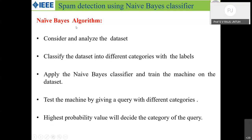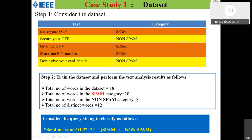Step 1: Consider and analyze the dataset for spam/non-spam classification. The dataset has input (text content) and output (spam/non-spam label) — it is labeled data. When data is labeled, we can apply the Naive Bayes algorithm. If it were unlabeled, we would use unsupervised learning. Labels present: spam, non-spam, spam, spam, non-spam.